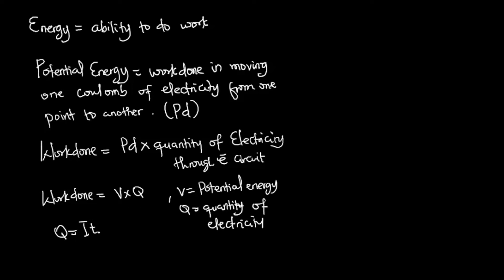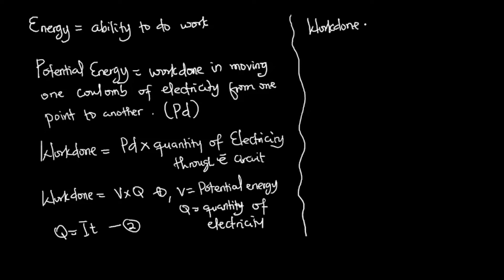Since Q = It (equation two) and W = VQ (equation one), we substitute equation two into equation one to get the work done equal to voltage multiplied by current and time: W = VIt. Let's call this equation three.